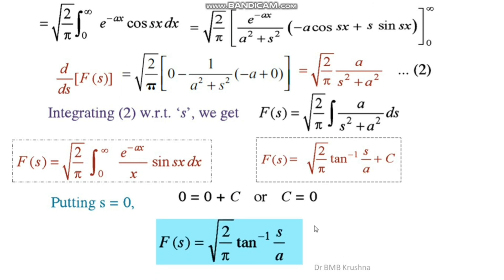After substituting C = 0, the required Fourier sine transform of f(x) = e^(-ax)/x is: F(s) = √(2/π) · tan⁻¹(s/a).